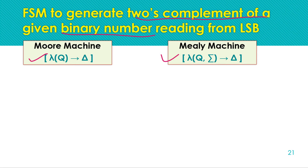For finding the two's complement, there is a shortcut method. We cannot find the one's complement and then add one to it, because Mealy and Moore machines cannot perform computation. Unlike DFA, we cannot perform arithmetic with these machines — for computation we have the Turing machine, which we will cover later.